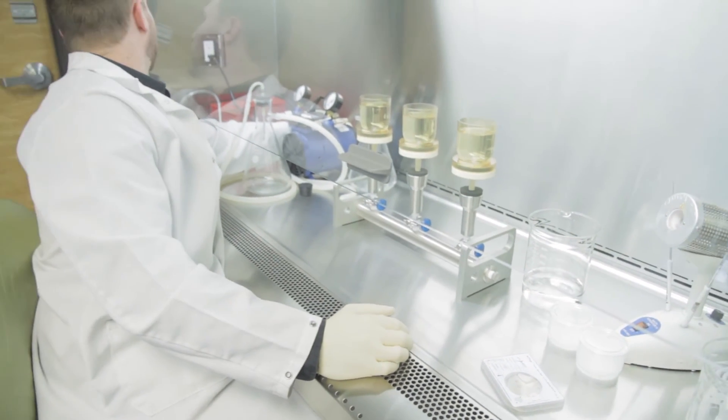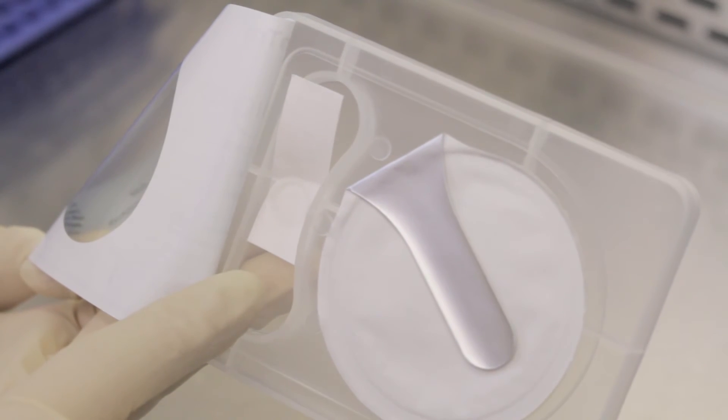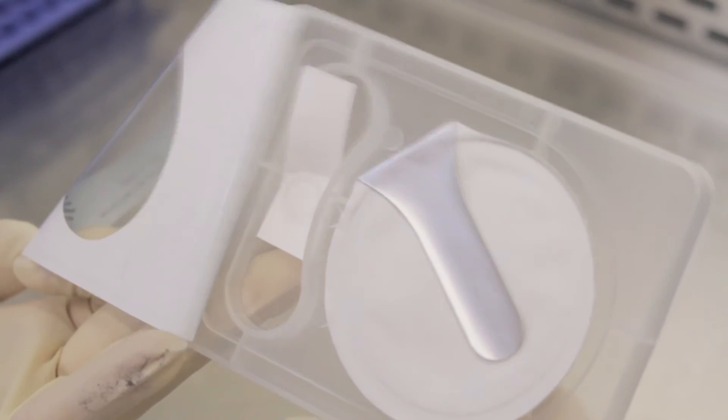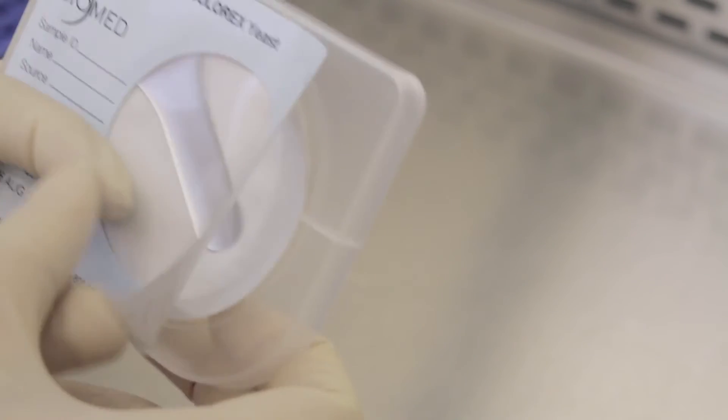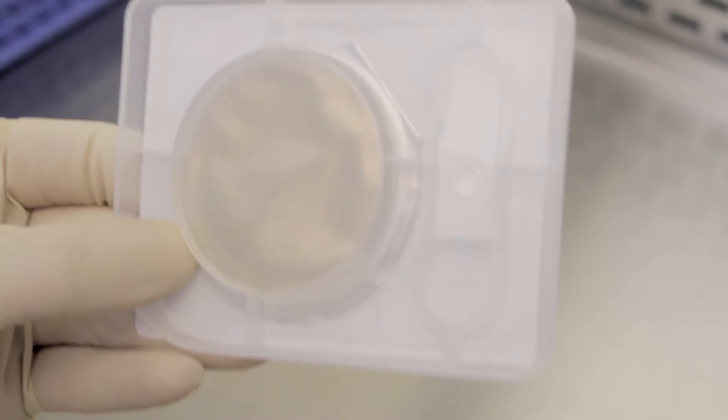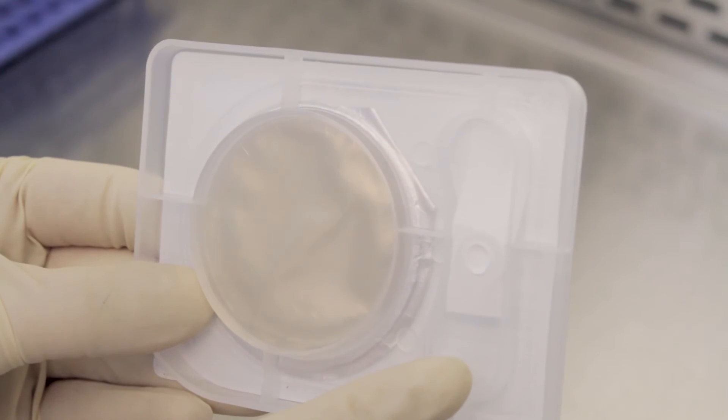For most applications, the in-tray includes a filtered vent which allows a clean supply of air to support organism growth. The vent has a filter which acts as a microbial barrier to prevent sample contamination from ambient organisms.